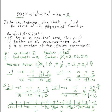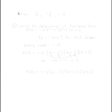We now have three zeros. The first zero is at x=1/2, the second at x=negative 1/5, and the third at x=negative 2. We've completed our task of using the rational zero test to find the zeros of the polynomial function.